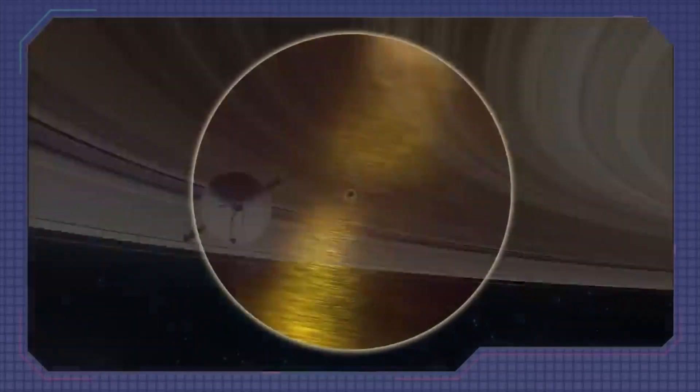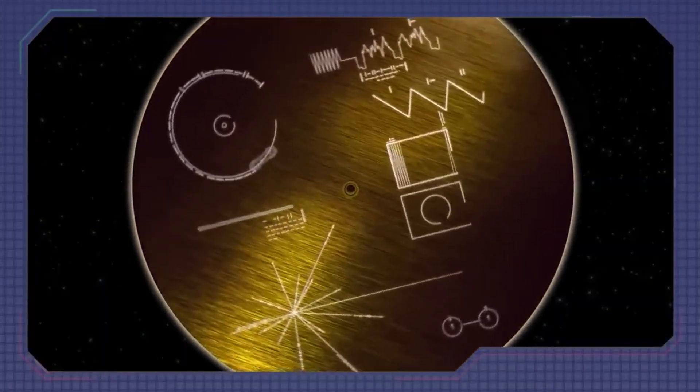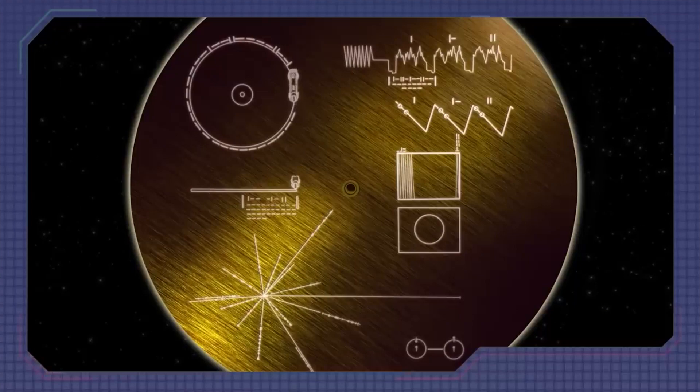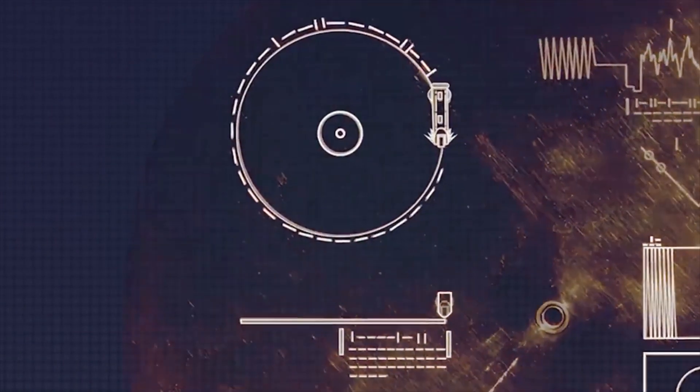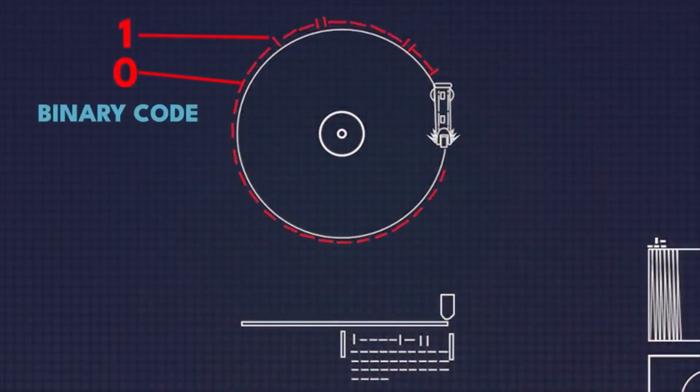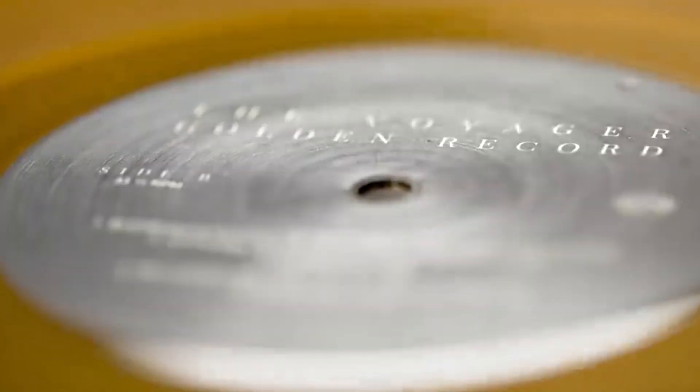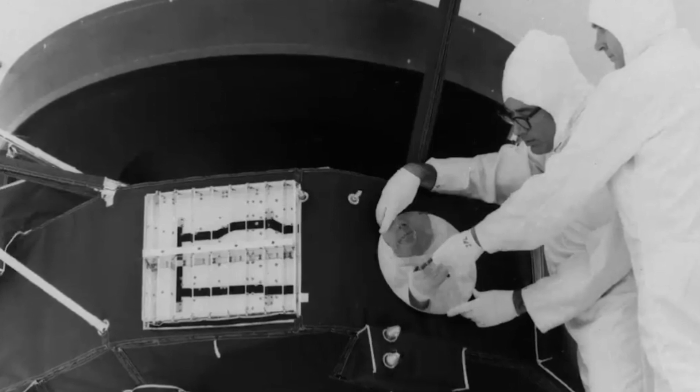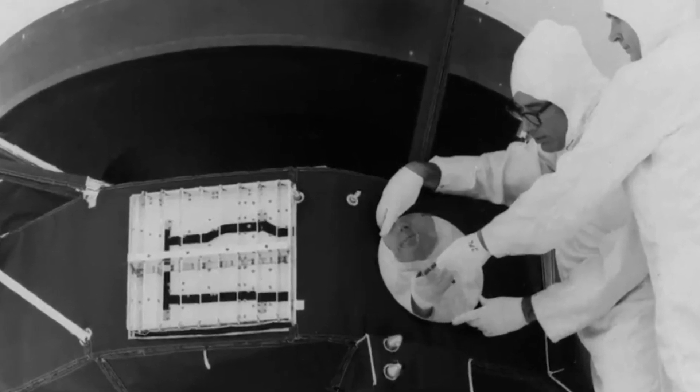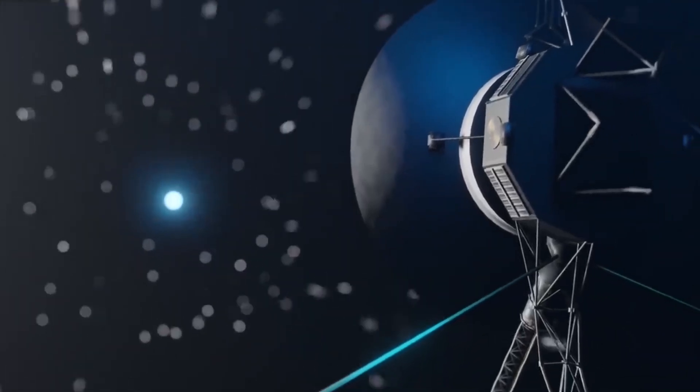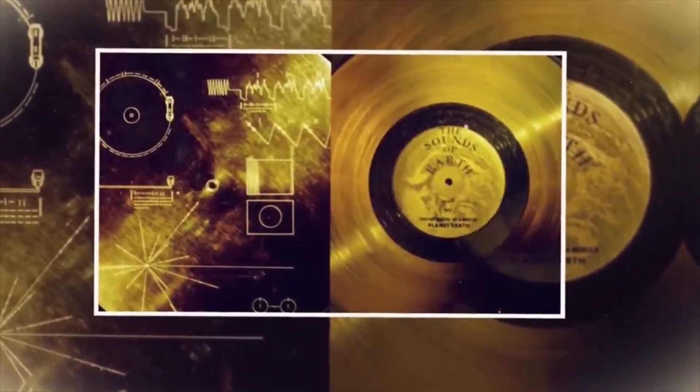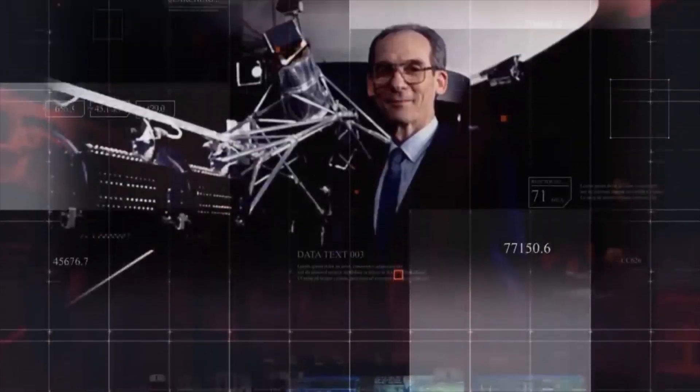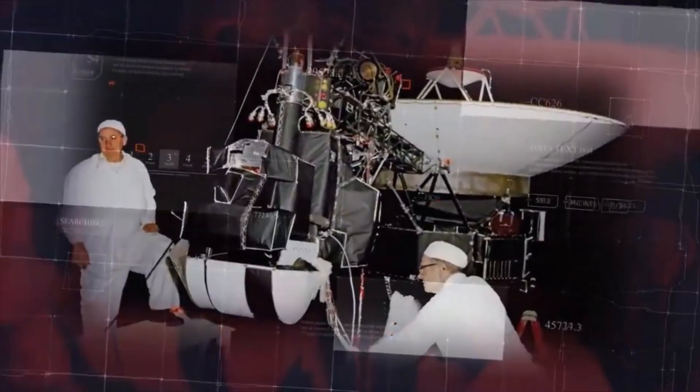But the records go beyond mere sensory experiences. They delve into the realm of knowledge, with scientific diagrams and formulas revealing the depths of our understanding. Astronomical maps and genetic blueprints offer a glimpse into our exploration of the cosmos and the intricacies of life itself. Crafted from gold-plated copper, these records are designed to withstand the rigors of space and endure for years to come. They may traverse the cosmos, serving as a testament to our existence, even if they never find an audience. Drifting through the expanse, these golden emissaries bear witness to the legacy of humanity, a reminder of our insatiable curiosity and unyielding spirit.